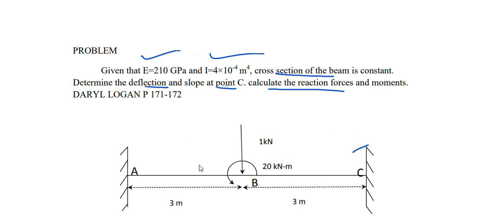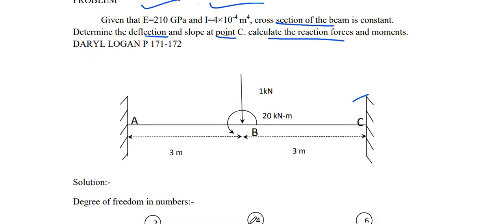You can see the question and diagram on the display. Both ends are fixed, represented as A and C, and the midpoint will be B. The total length is 6 meters and a load acts at the midpoint — that is 10 kilonewtons — and there is a 20 kilonewton per meter moment load also acting at the same point.